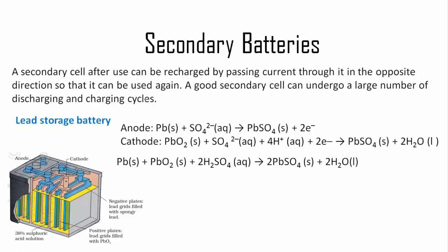The best example is lead storage battery, which we use in cars and inverters. At anode, lead reacts with sulphate obtained from sulphuric acid and gets converted into lead sulphate. At cathode, lead oxide again reacts with sulphuric acid to produce lead sulphate.